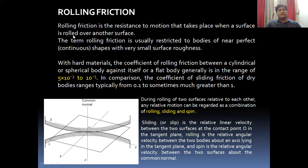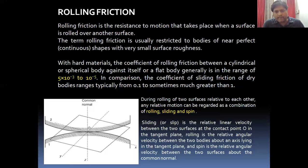As far as rolling friction is concerned, rolling friction is the resistance to motion when one surface is rolled over another surface. Rolling friction is usually restricted to bodies which have nearly perfect shapes, like perfect cylindrical shapes, and very small surface roughness. The coefficient of rolling friction ranges from 0.5×10⁻³ to 10⁻⁵, whereas in comparison, the coefficient of sliding friction for dry bodies typically ranges from 0.1 to 2, and sometimes much greater than 1.